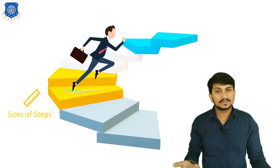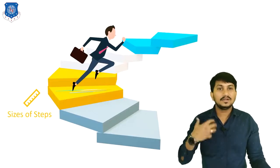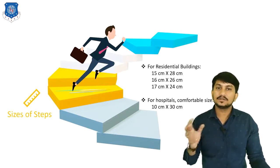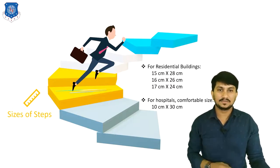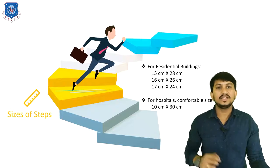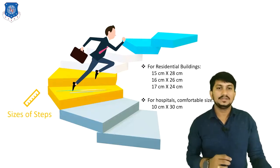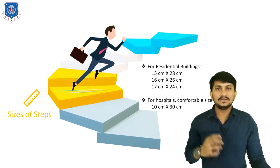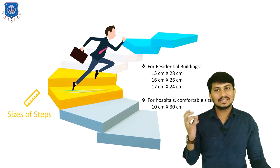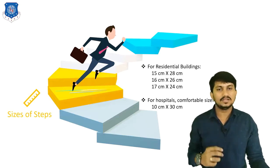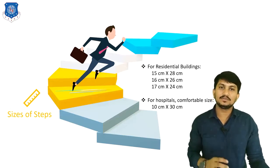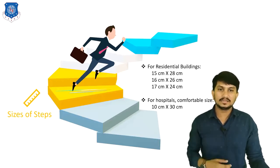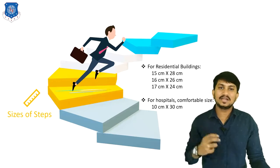Next are the sizes of stairs. For residential buildings, sizes of stairs are 15 cm by 28 cm, or 16 cm by 26 cm, or 17 cm by 24 cm. For hospitals or comfortable sizes of government buildings, it is used as 10 cm by 30 cm.